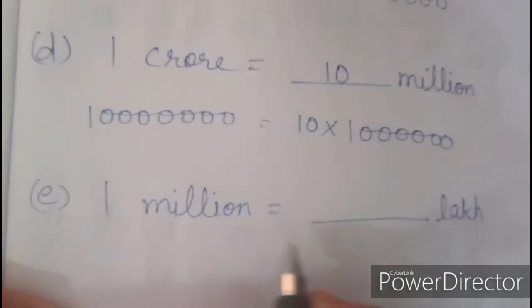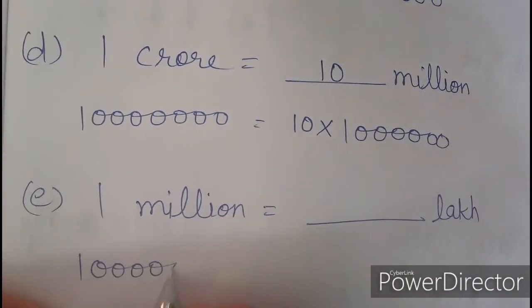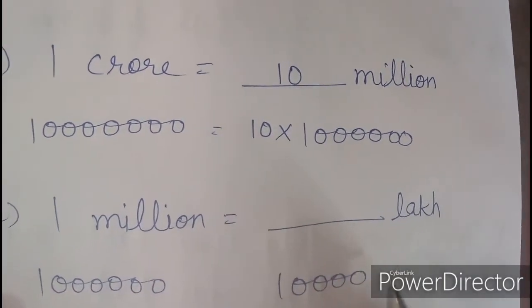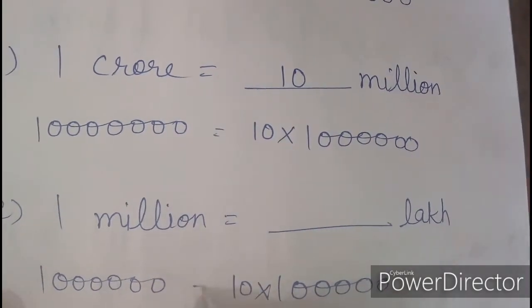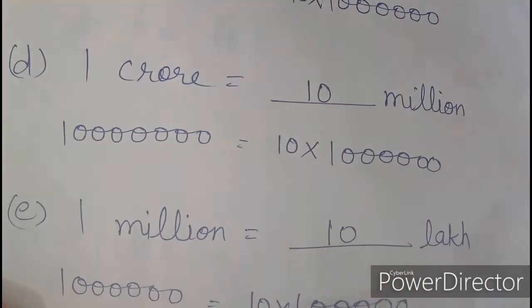Now question number E: 1 million is equal to how many lakhs? 1 million has 6 zeros, and 1 lakh has 5 zeros. We can multiply it with 10 and make them equal. So write here, 1 million is equal to 10 lakhs.